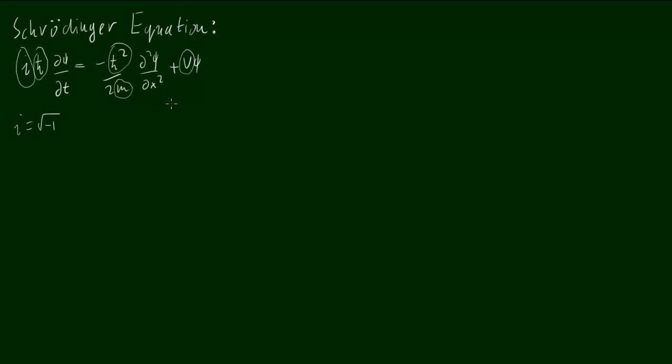Now, a word about the imaginary numbers. Most people, the first time they come against the Schrödinger equation, are a bit weirded out by the fact that there's an i there. And in this video, I actually show that you don't need the i there, but it does mean that the equation is much more manageable.